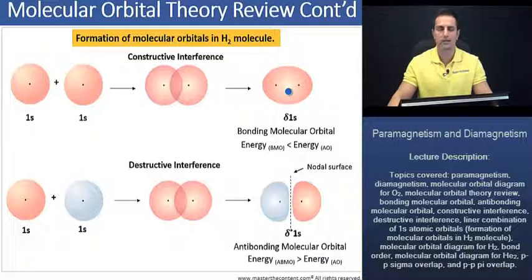Recall what we said about the sigma bond. The sigma bond is going to be a covalent bond in which the highest electron density lies along the bond axis.